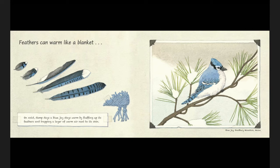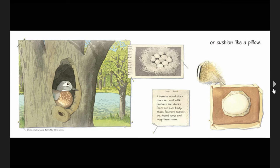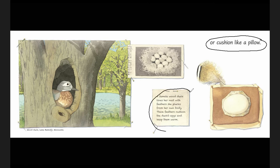Let's go to the next page. Or cushion like a pillow. A female wood duck lines her nest with feathers she plucks from her own body. These feathers cushion the duck's eggs and keep them warm. Now I'm noticing these same three chunks on this page as well. I've got this simile that acts like a heading — cushion like a pillow. There's my heading. And then I have this caption once again in the white box. And then I have an illustration with a label.